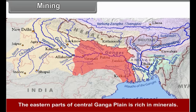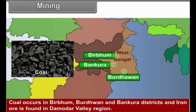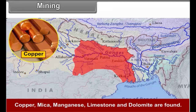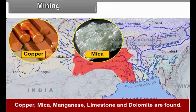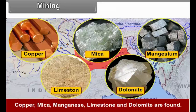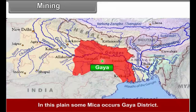Mining. The eastern part of the central Ganga Plain is rich in minerals. Coal occurs in Dhanbad, Burdwan and Bankura districts and iron ore is found in the Damodar Valley region. Copper, mica, manganese, limestone and dolomite are found in this plain. Some mica occurs in Gaya district.